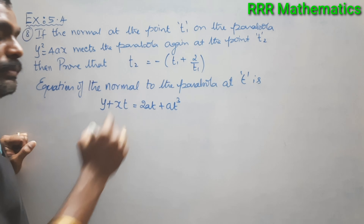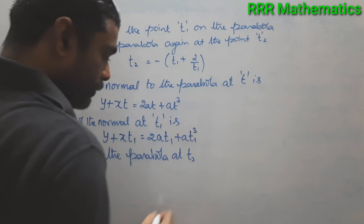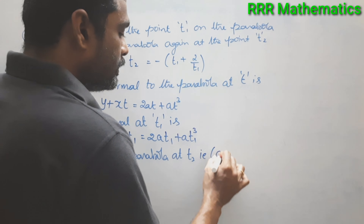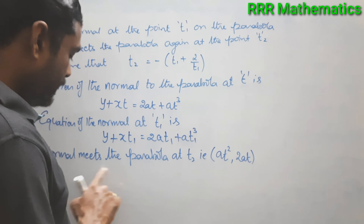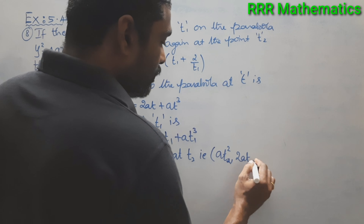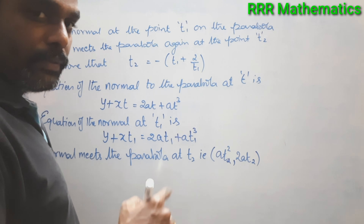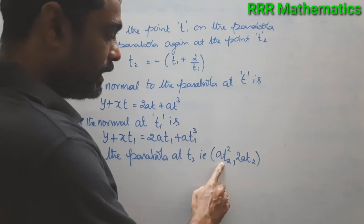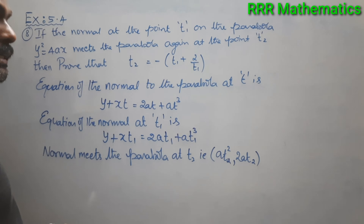Since the normal meets the parabola again at the point t2, we use the parametric form of the parabola: (at², 2at). Replacing t by t2, the point is (at2², 2at2). We now substitute this point into the normal equation to get the required relation.